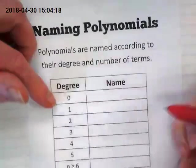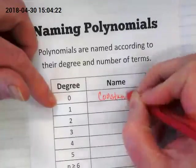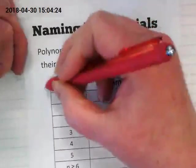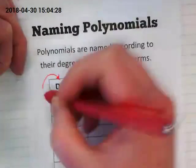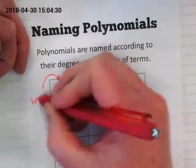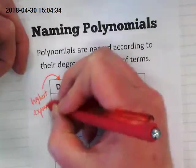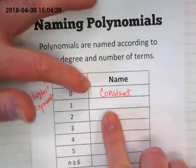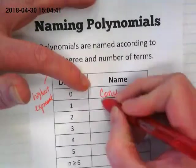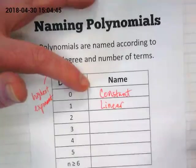So when there's a degree of zero, we call that a constant. And by the way, for degree, we're talking about always that leading term with the highest exponent. So I'm going to go through this pretty quickly. Just constant is zero, linear is one, to a degree of one.